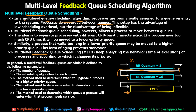In general, a multi-level feedback queue scheduler is defined by the following parameters: the number of queues, the scheduling algorithm for each queue - each queue can have a different algorithm, so queue one can have round-robin, queue two can have FCFS, queue three can have SJF, and so on. There are also other criteria: the method used to determine when to upgrade a process to a higher priority, when to demote a process to a lower priority, and which queue a process will enter when it needs service. These are complex parameters on which MLFQ scheduling works. Now let's see a practical numerical example.